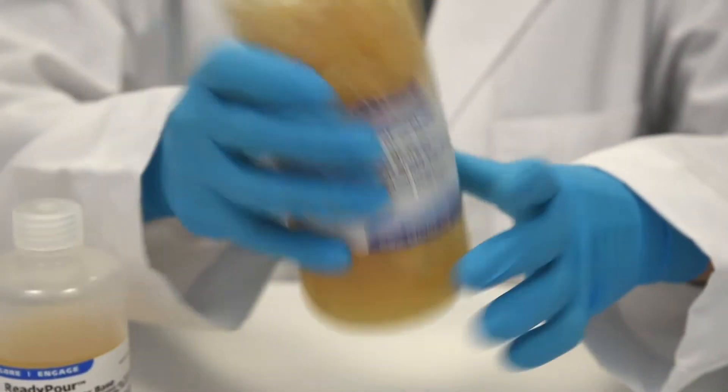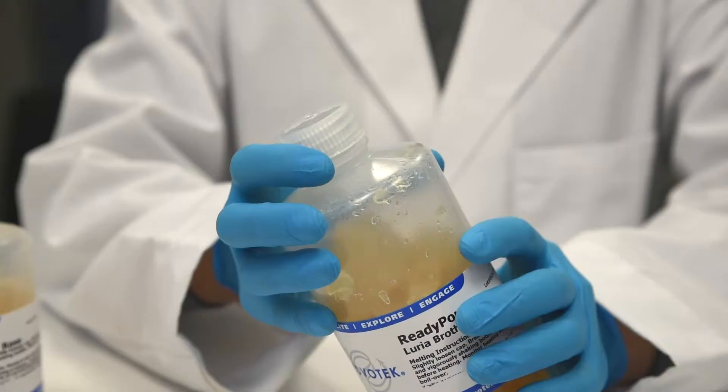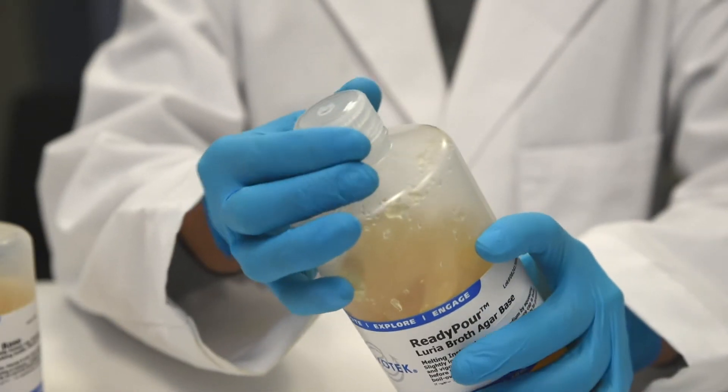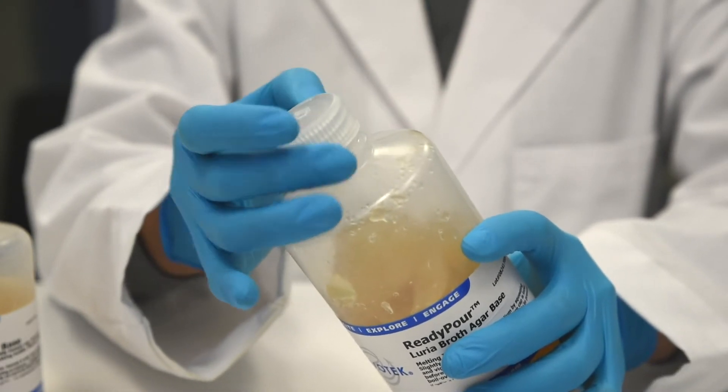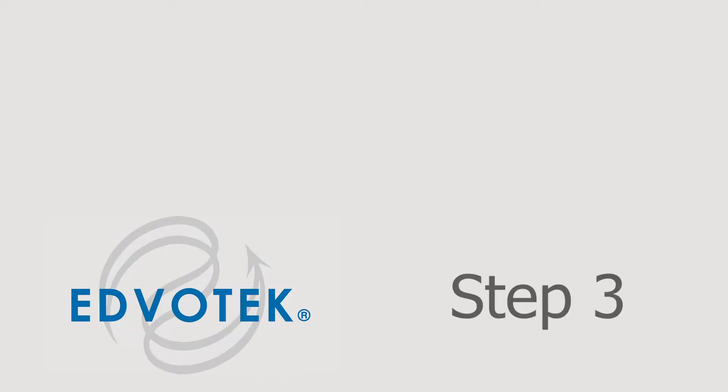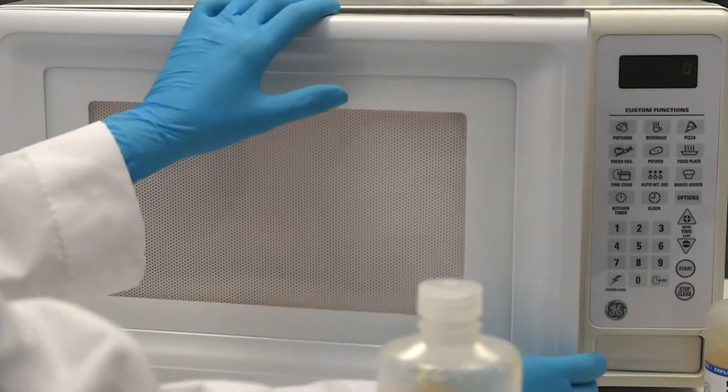Step 2: Loosen but do not remove the caps on the ready pour agar bottles. This allows the steam to vent during heating. Step 3: Starting with the small bottle, microwave on high for 60 seconds to melt the agar.